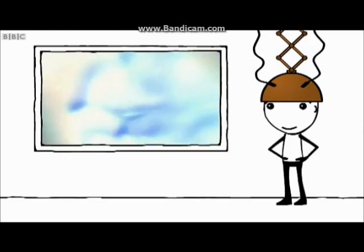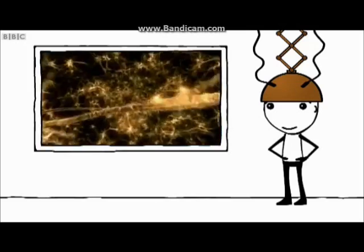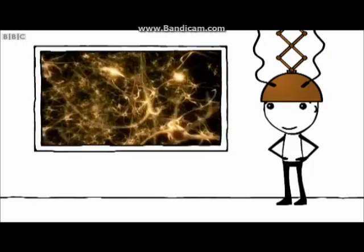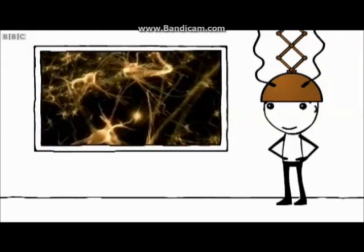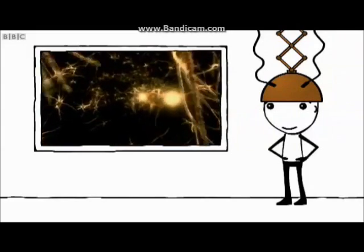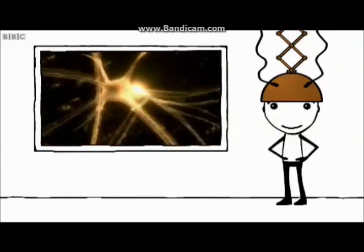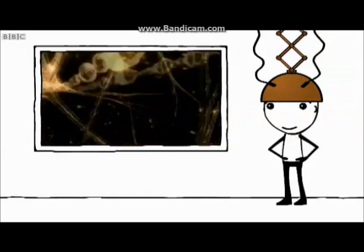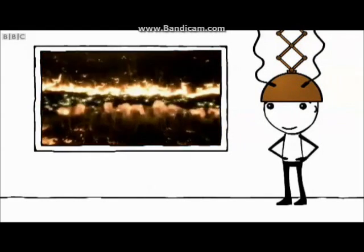All this work is done by a network of 100 billion nerve cells, or neurons. Electrical signals send information along pathways through the network, with individual neurons communicating with each other by passing chemicals across the tiny gaps that separate them. Every thought or experience you have is a reaction along a whole pathway of neurons. And there are 40 quadrillion possible ways for the neurons to connect.